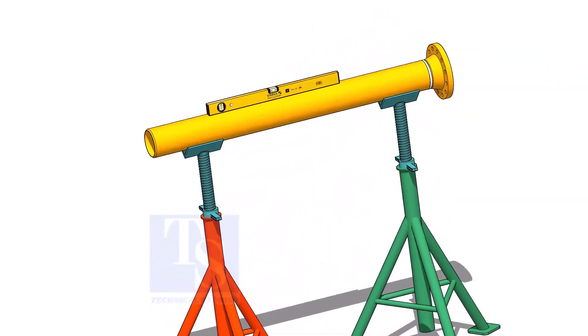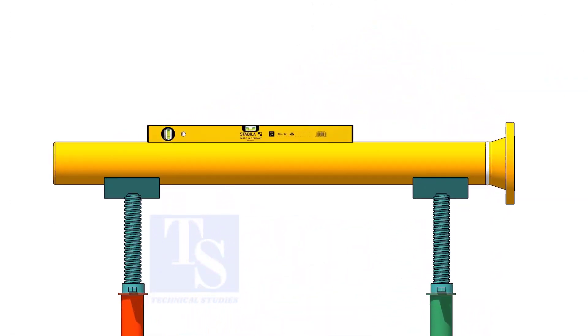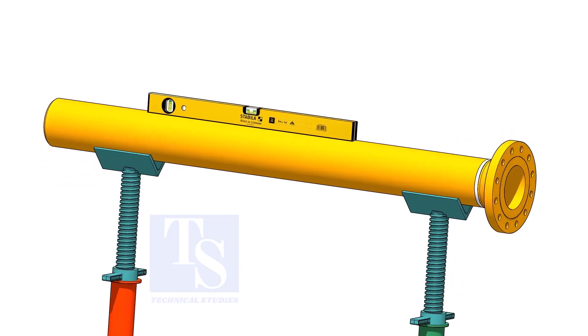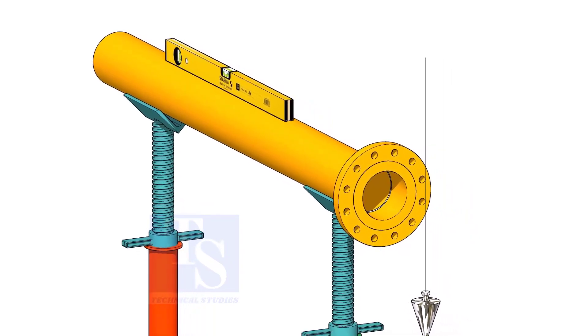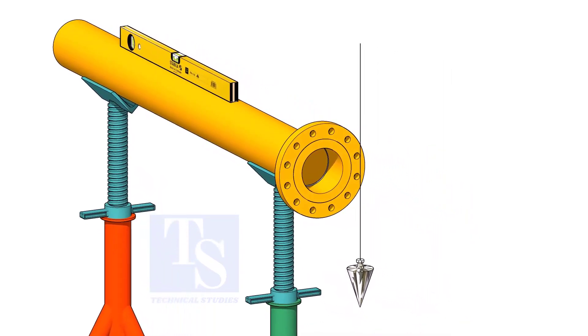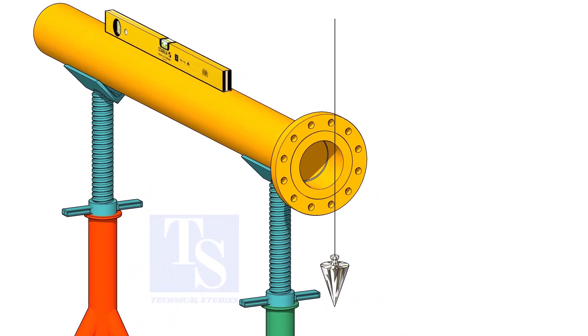Level the pipe and the flange. When you plumb the flange holes, choose the holes closer to the center of the flange.